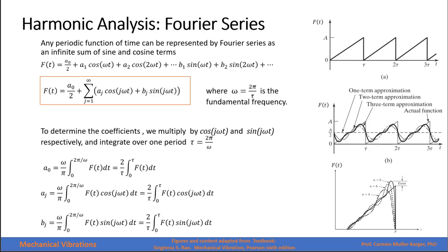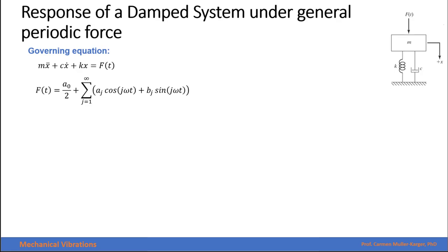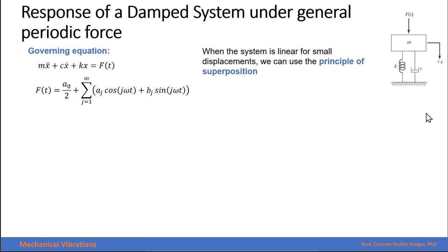That is what is called the Gibbs phenomenon. Using this form, we convert a periodic function into a summation of cosine and sine terms plus an independent constant term. To calculate these coefficients, we substitute the original function into the integral definitions. Now that we have the function in terms of harmonic functions, the response of the system follows the principle of superposition because the system is linear and we work with small displacements.